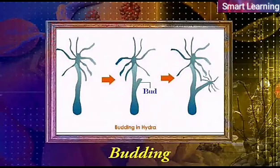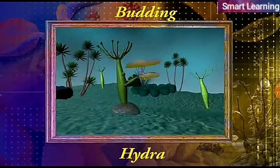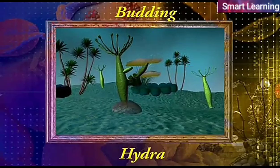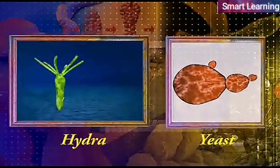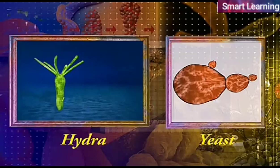In this module we will discuss budding. In budding, a small part of the body of the parent organism grows out as a bud, which then detaches and becomes a new organism. This is observed in hydra and yeast. A bud develops as an outgrowth due to repeated cell divisions at one specific side. These buds develop into tiny individuals and when fully mature they get detached from the parent body and become new independent individuals.